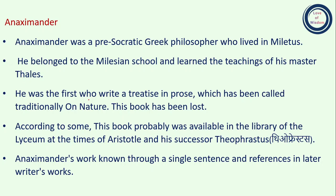He was the first to write a treatise in prose, which has been traditionally called 'On Nature.' This book has been lost. It is said that Anaximander was the first person who was known for his written work. According to some, this book was probably available in the library of the Lyceum at the time of Aristotle and his successor Theophrastus.